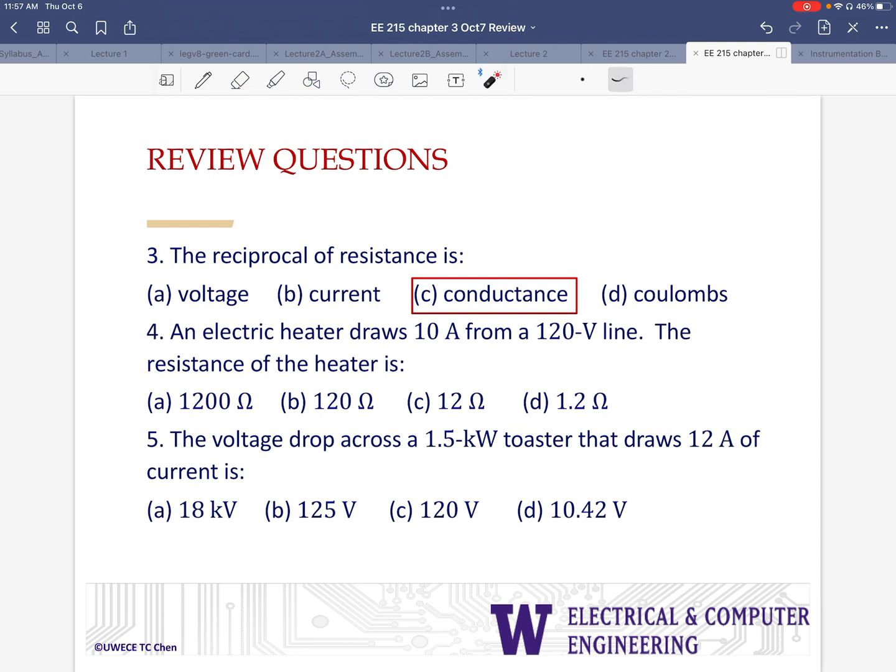Next question, an electric heater draws 10 amps of current from a 120 volt line. We have to find the resistance. This is just a simple application of Ohm's law. We find R by dividing V by I. And 120 divided by 10 would give us 12 Ohms.